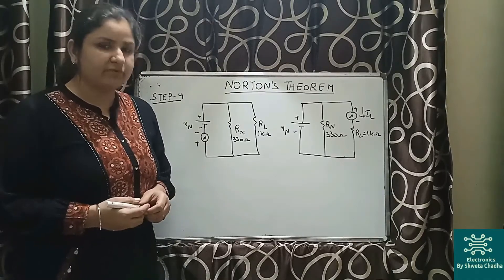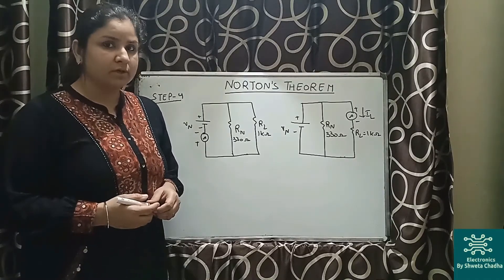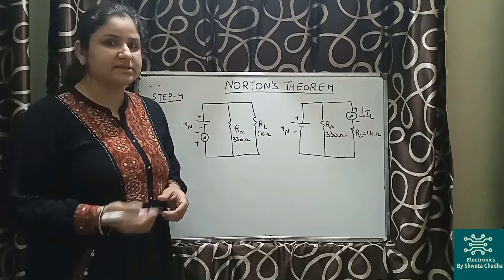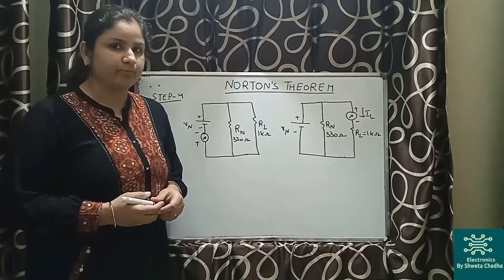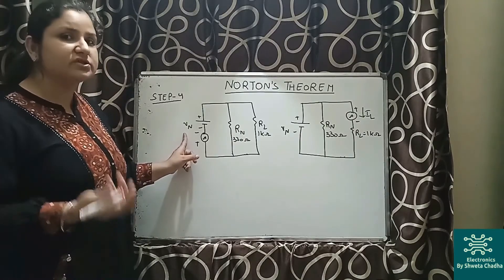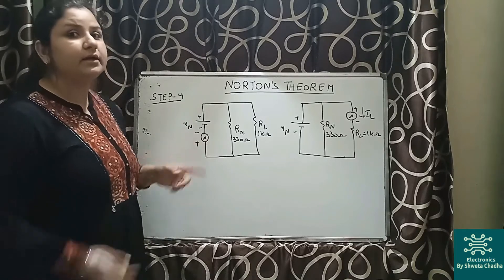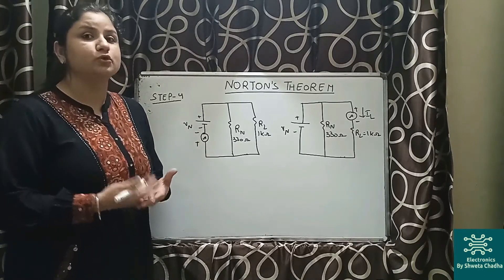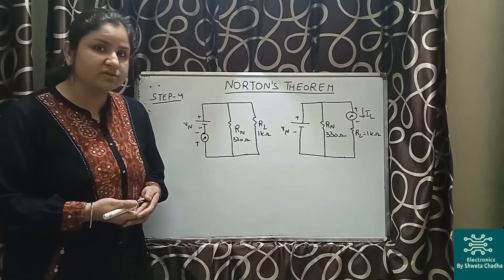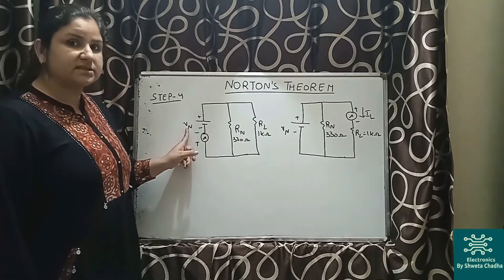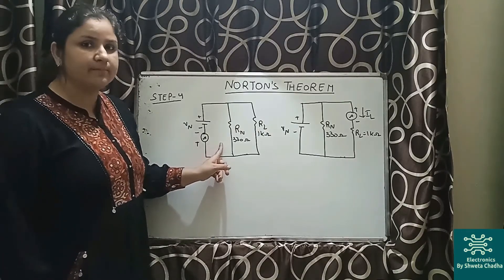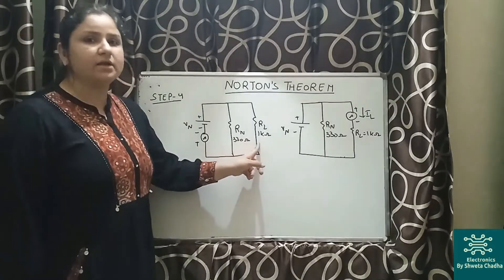In step number 4, In is in parallel with Rn, which is in parallel with Rl. Now, since we don't have a current source available, what we are supposed to do is calculate Vn — the voltage equivalent needed to generate In. So Vn, that is the supply voltage, will be connected in series with the ammeter, and the remaining connection stays the same: in parallel with Rn and in parallel with Rl.